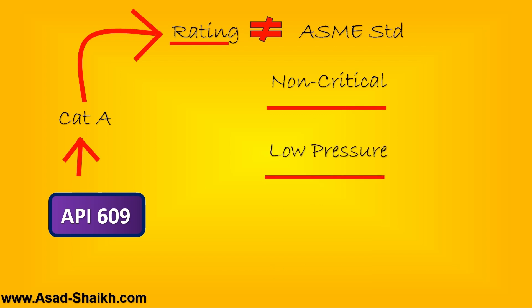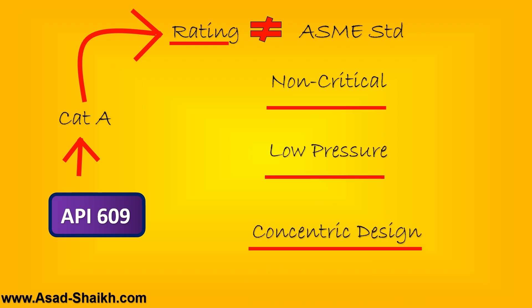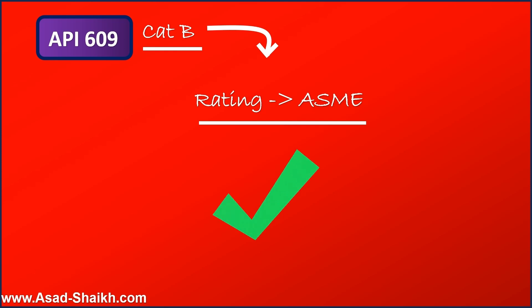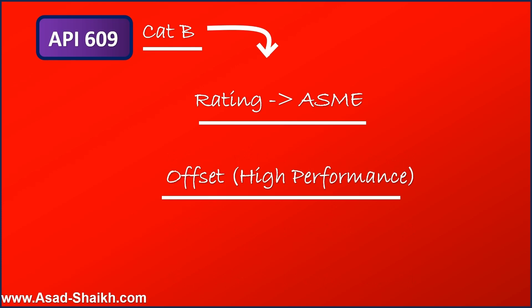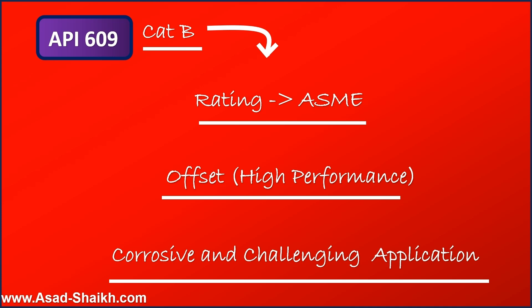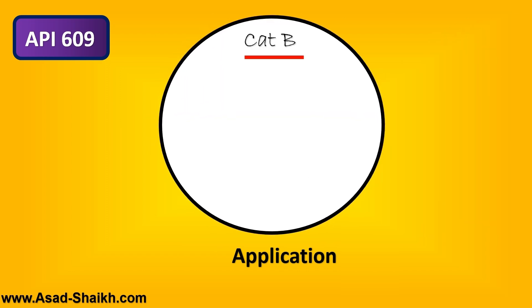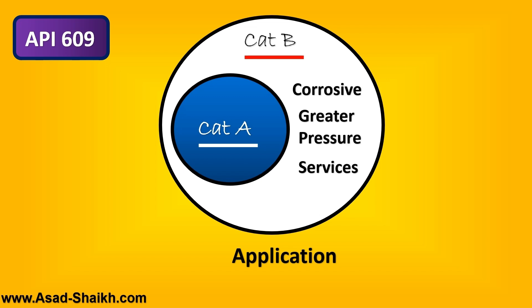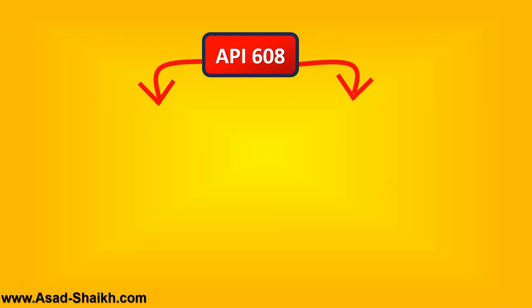In simple words, Category A can be used in non-critical applications with low pressure drop where a concentric design is sufficient. Category B control valves have ratings in compliance with ASME B16.5 and B16.47 standards for flange rating. They have offset designs available — single, double, and triple offset — offering very high performance and leakage reduction. Corrosive and challenging applications are catered by Category B valves. Category B can cover all services Category A handles plus corrosive and higher pressure drop applications, while Category A cannot cover all services Category B can.